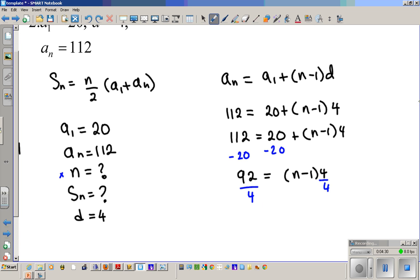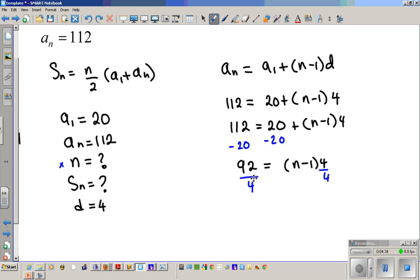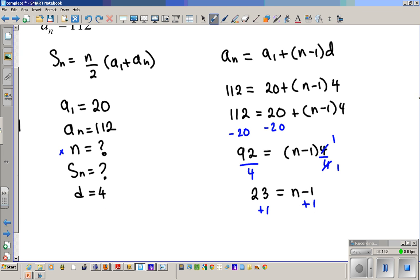Divide this by 4, that gives me 23 equals N minus 1. We add 1 to both sides, add 1, add 1. And then you get the missing N that we need. So N equals 24. So now we now know that N in this case equals 24.